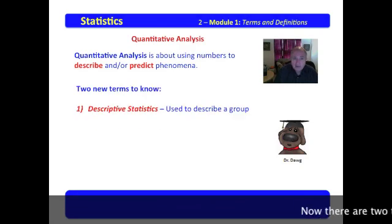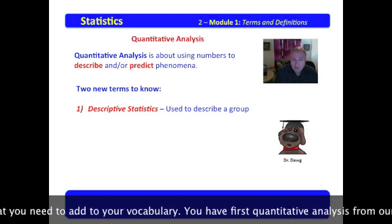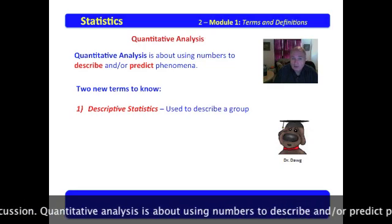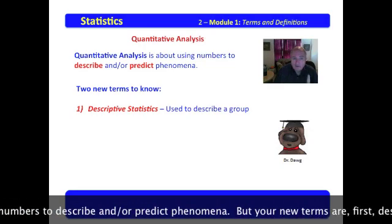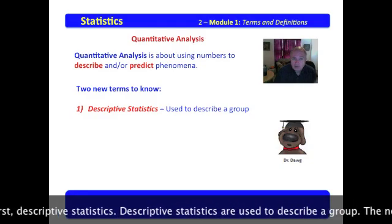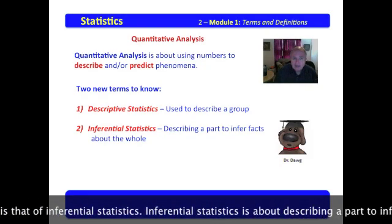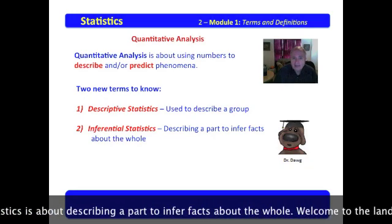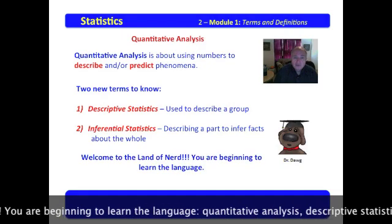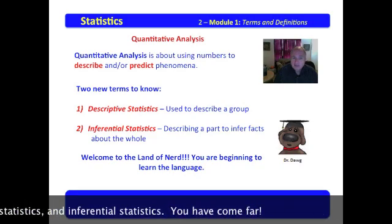There are two terms to add to your vocabulary. First, from our last discussion: quantitative analysis — using numbers to describe and/or predict phenomena. Your new terms are: descriptive statistics, used to describe a group; and inferential statistics, about describing a part to infer facts about the whole. Welcome to the land of nerds — you're beginning to learn the language: quantitative analysis, descriptive statistics, inferential statistics.